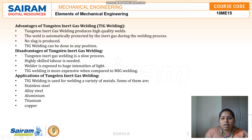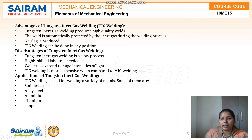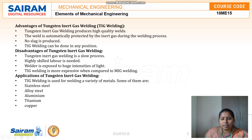The advantages of TIG welding are: it produces high quality welds, the weld is automatically protected by the inert gas, no slag is produced, and it can be done in any position. The disadvantages are: it is a slow process, highly skilled labor is required, it exposes workers to high intensity light, and it is more expensive than MIG welding. Applications include welding of stainless steel, alloy steel, aluminium, titanium, and copper.